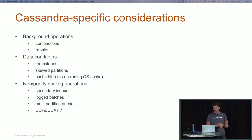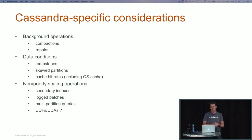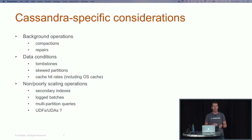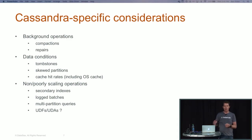The second Cassandra-specific consideration is data conditions that can impact performance. Tombstones — the markers for deletes stored in SS tables — can make a massive difference. There can be a huge difference in performance between running a select on a table that's just been populated with fresh data versus a table that's had data deleted or updated and has a lot of tombstones. In planning your Cassandra test, make sure you understand whether the application is going to do deletes, what level of deletes, whether it's going to do updates, and build that into your performance test.